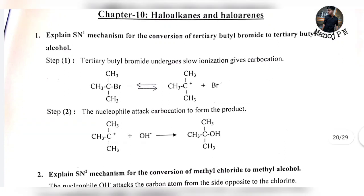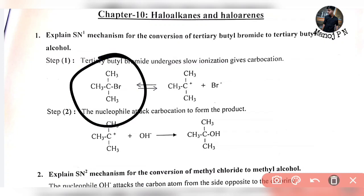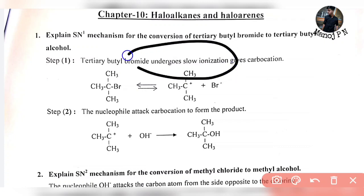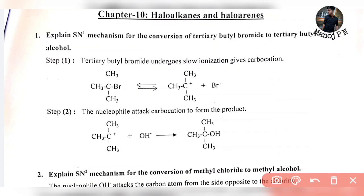The same reaction is Step 1. This is the tertiary butyl bromide. Slow ionization — this is the most important point. This is the ionization. This is the slow ionization. It will form a carbocation.